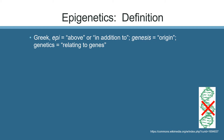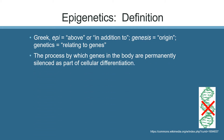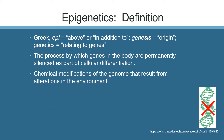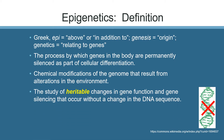Epigenetic regulation is the process by which genes in the body are permanently silenced as part of cellular differentiation. It refers to the chemical modifications of the genome that result from alterations in the environment. More recently, epigenetics involves the study of heritable changes in gene function and gene silencing that occur without a change in DNA sequence.